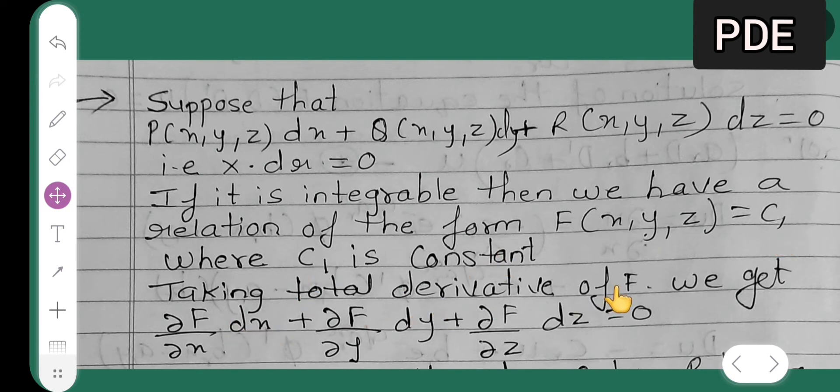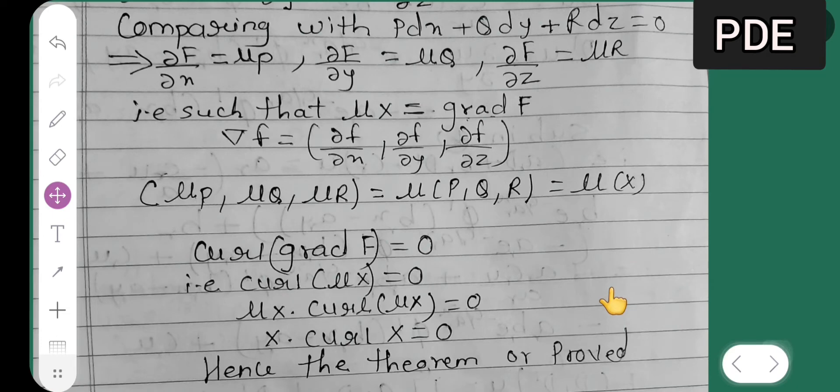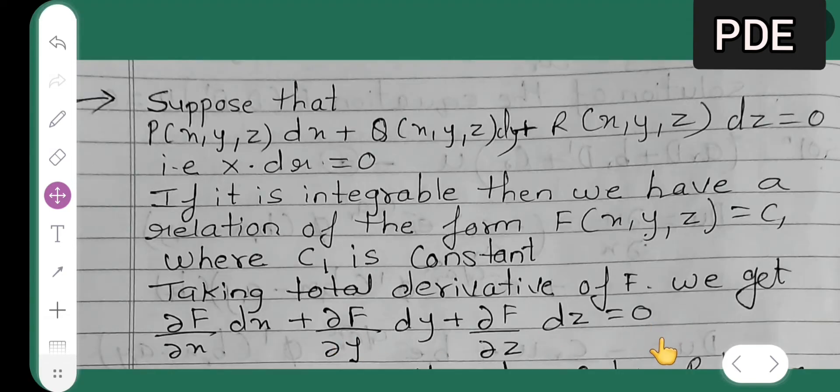Okay, taking total derivative of f, if I take total derivative of f, we get ∂f/∂x dx + ∂f/∂y dy + ∂f/∂z dz = 0, and comparing with P dx + Q dy + R dz = 0. So what I am doing is I am comparing this with this.